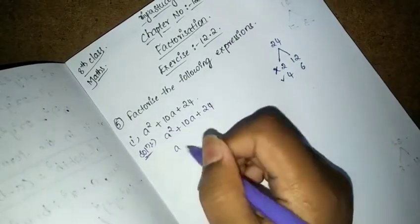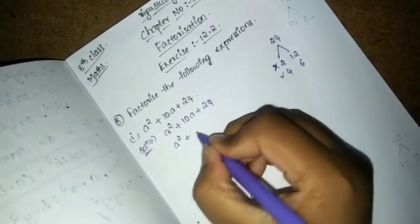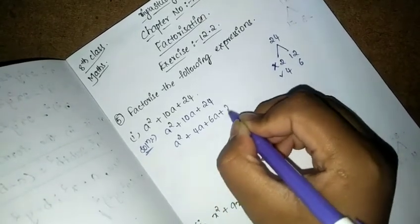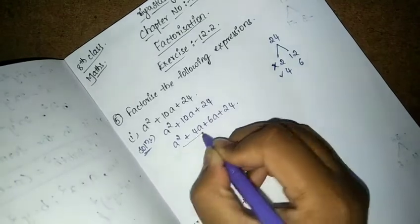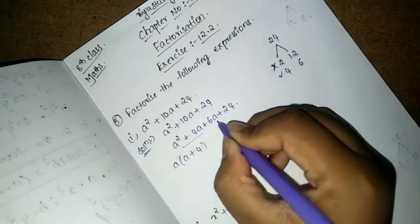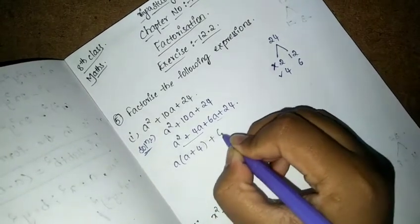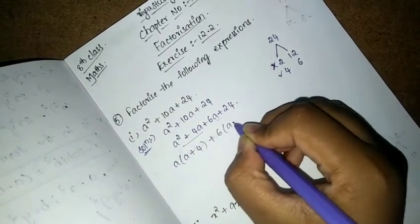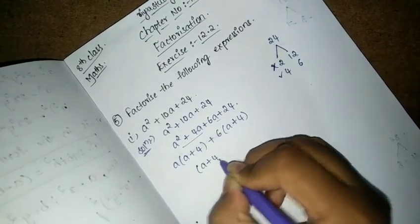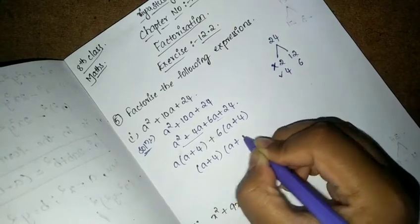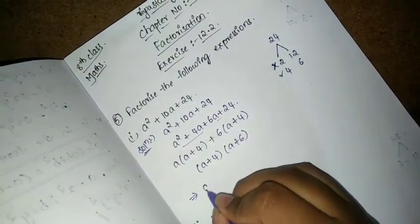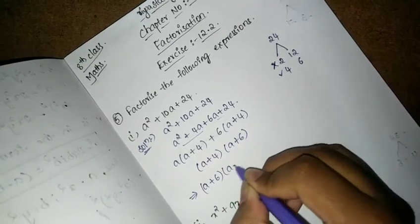So we can write this as a² + 4a + 6a + 24. From these 2 we can common a, then we get a plus 4. From these 2 we have 6 common, then we get a plus 4. Then we have a plus 4 common, then we have a plus 6. So the final answer for this equation is (a + 6) into (a + 4).